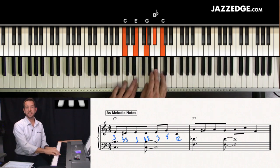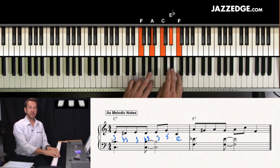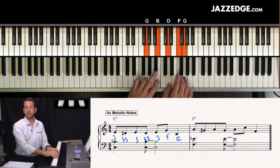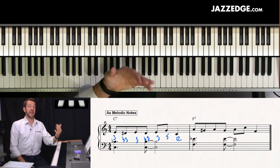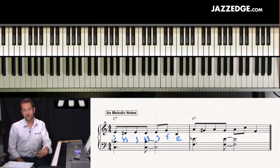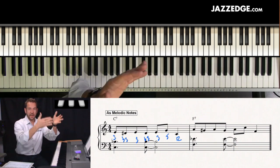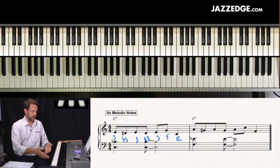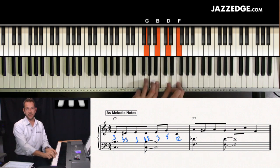But when you're thinking about improvising using chord tones, you're going to think about the chord tones for each chord that you're on. Or you can also think of it as the chord of the moment. What chord are you on at this particular moment? If you're on the G chord, well those are the notes of your G chord.